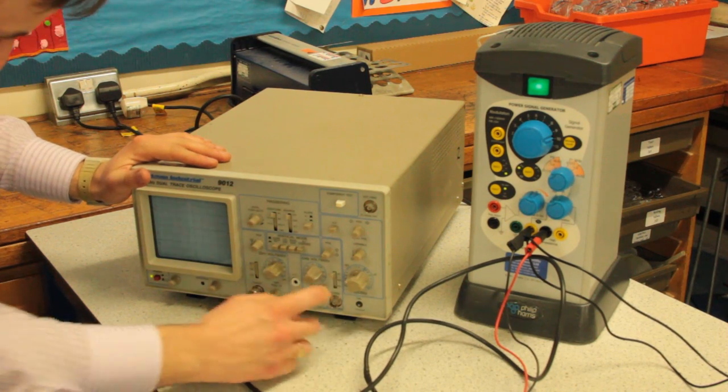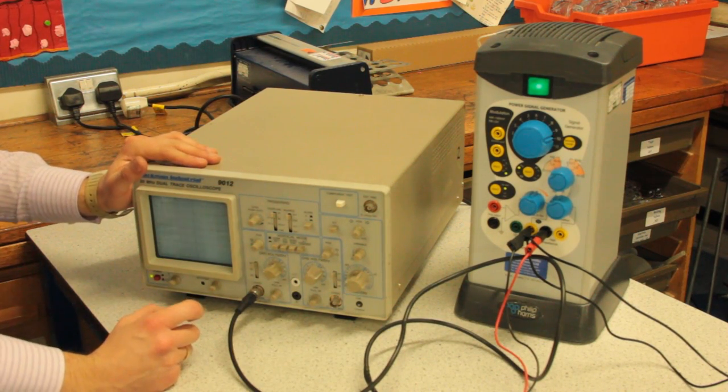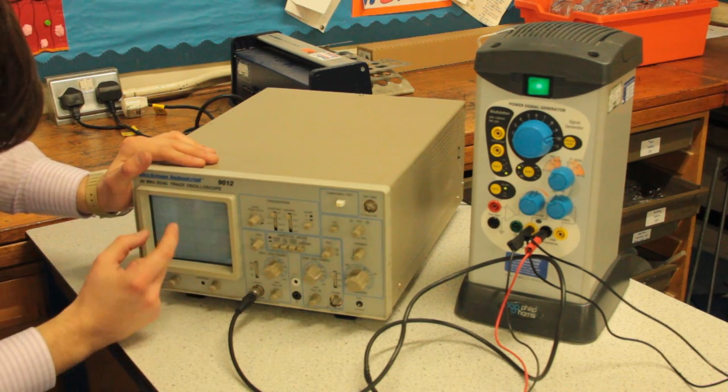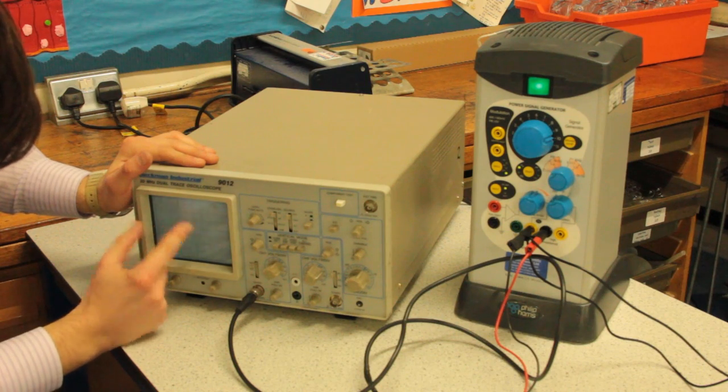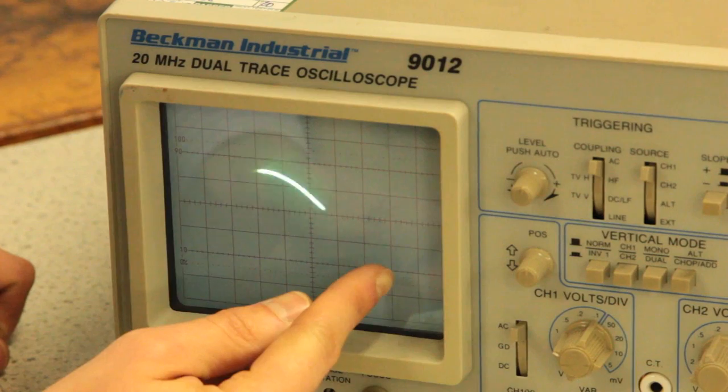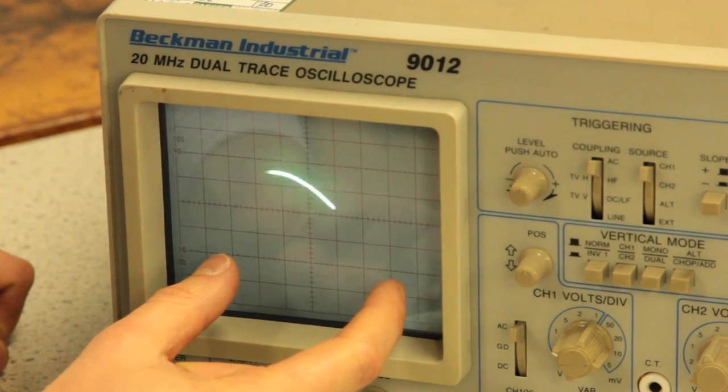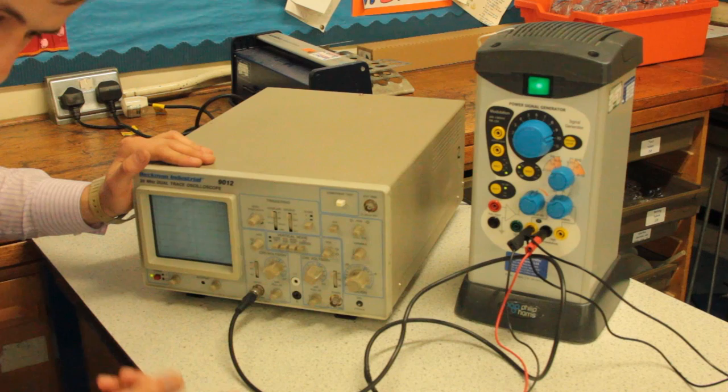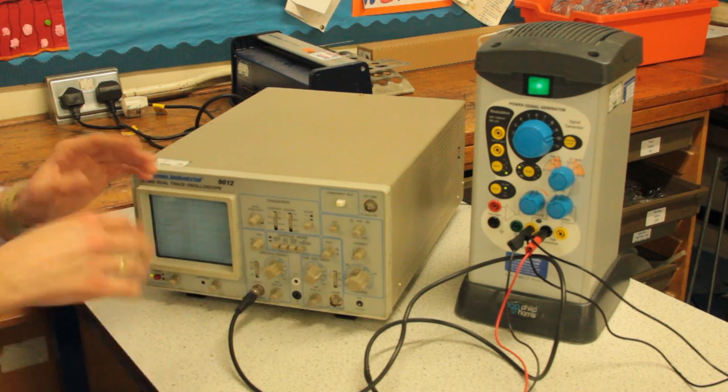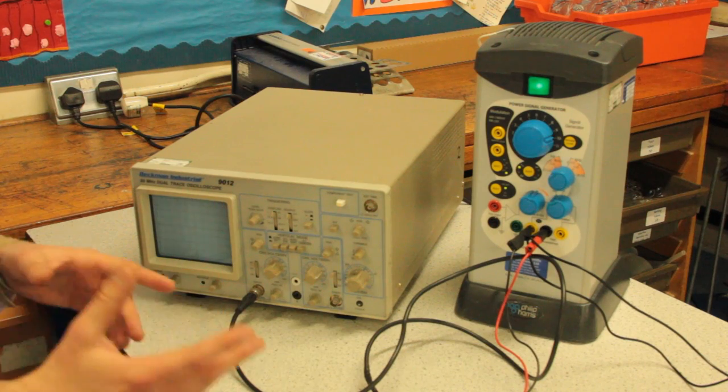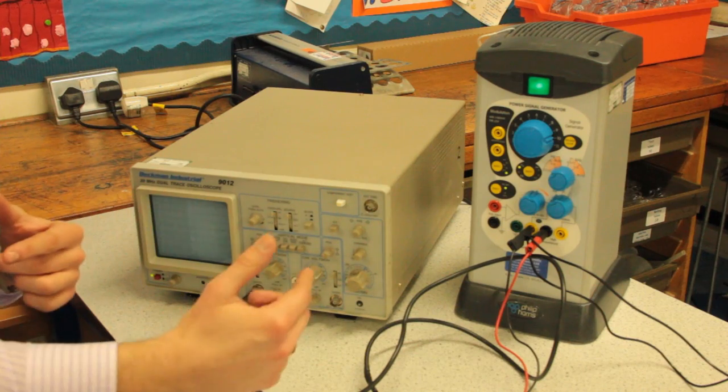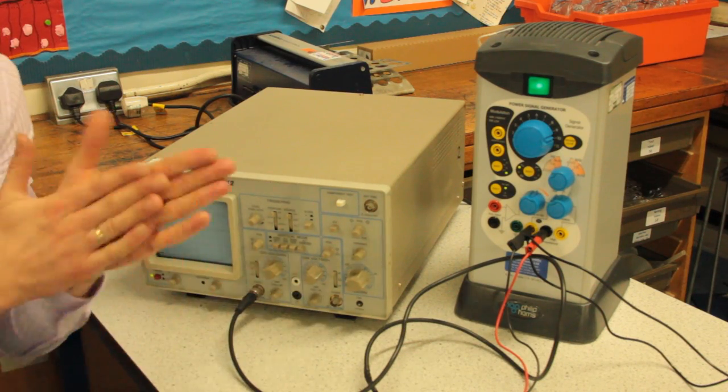And the time base is at 10 milliseconds, so that's 10 milliseconds per square. We have half a wavelength between here and here which is one, two, three, four, five. So a whole wavelength would be 10 squares. That's 10 times 10 milliseconds, that's 100 milliseconds. So the time period for our wavelength is 100 milliseconds, so our frequency is one over that which is 10 hertz.